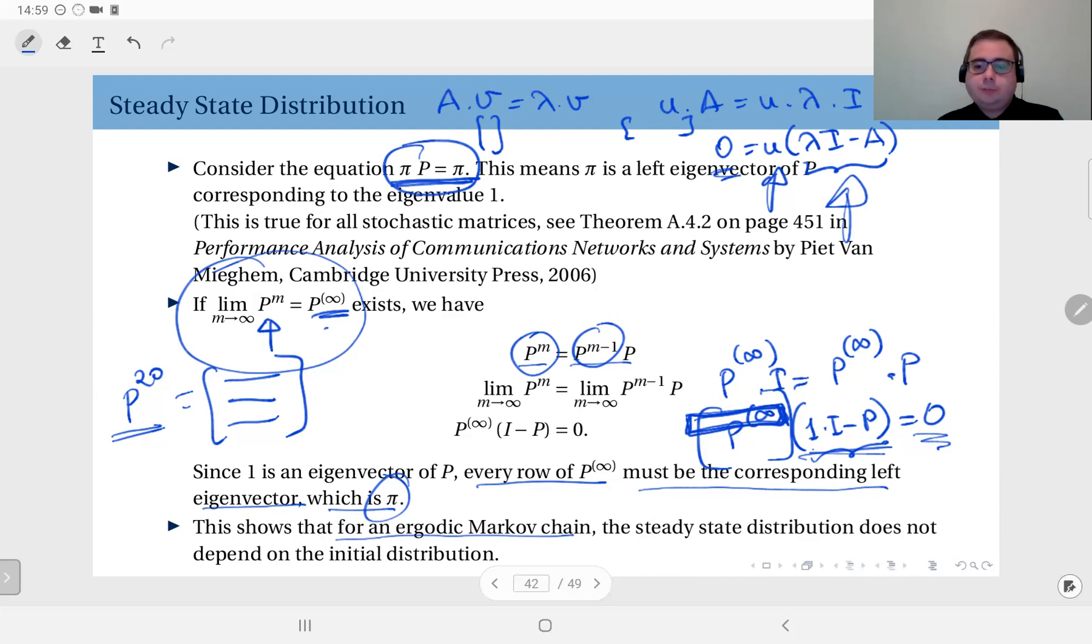the steady state distribution does not depend on the initial distribution. Because you see, every row becomes the same after a while, and therefore wherever you start, the Markov chain has no effect on the steady state.